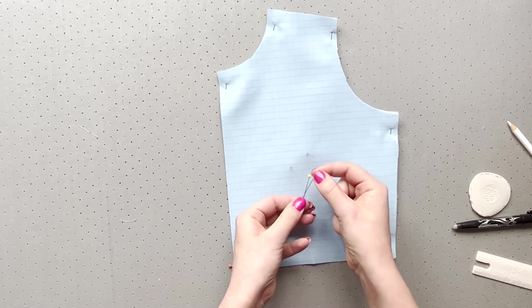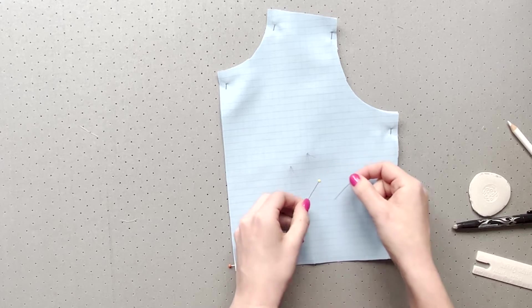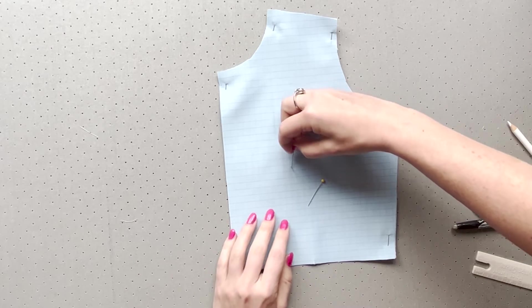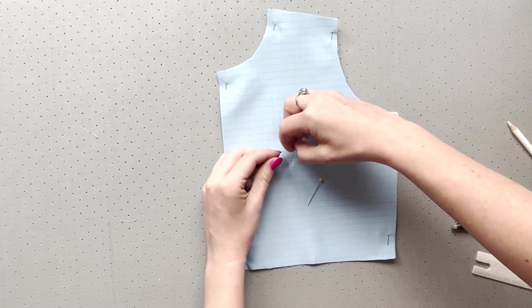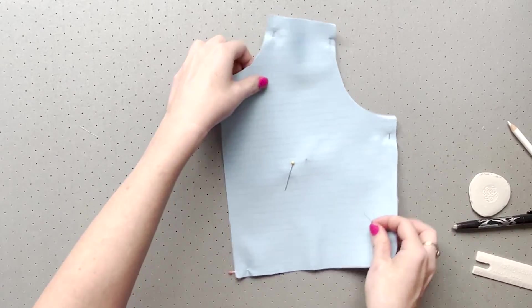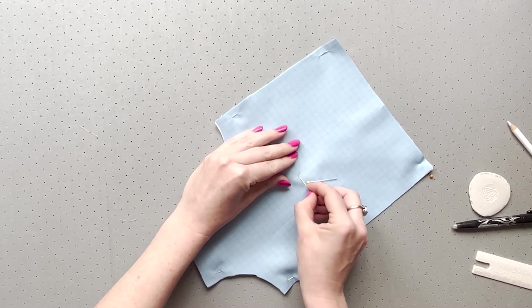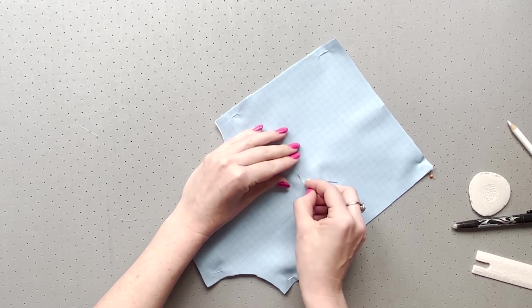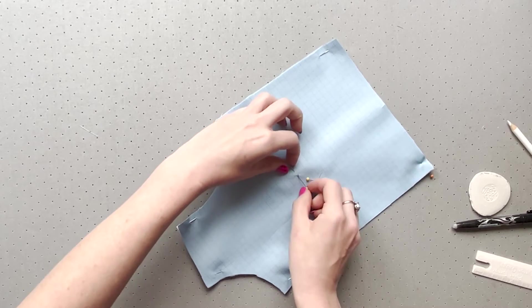This is where we now differ. Instead of marking this location with a marker we will use a pin. I like to pick a pin color for this that stands out against my fabric, typically yellow, and I only use it to mark darts for the whole project.